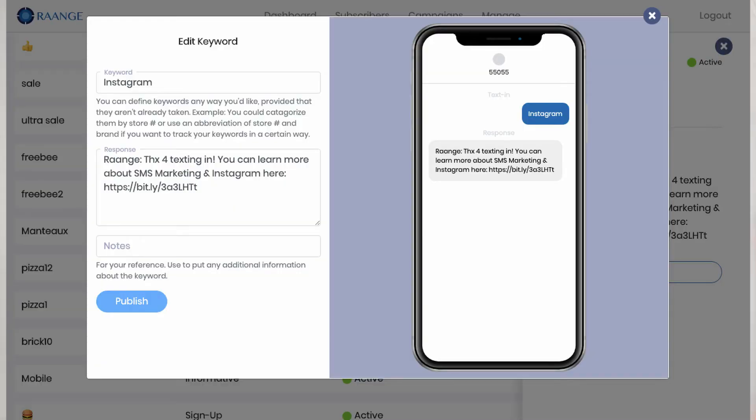So not only is it about capturing first party data at that point, you can also augment the experience. So if you see a short story, you can have a customer text into an SMS keyword to get a link to see the full story or the full video. So it's really about making those engagements across multiple channels that your customers are already on.